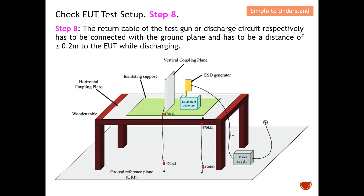Step number eight: the return cable of the test gun, or the discharge circuit, must be connected to the ground plane and must maintain a distance of at least 0.2 meters from the EUT during discharge. If this length is less than 0.2 meters, you do not comply with step number eight.